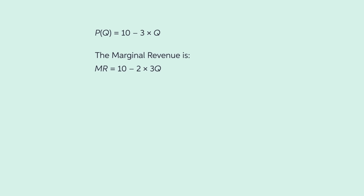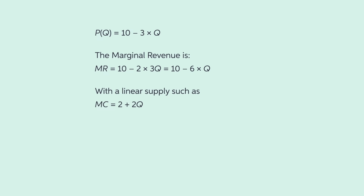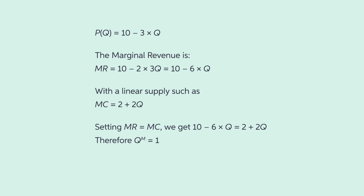For instance, if the demand is P equals 10 minus 3 times Q, then the marginal revenue is the first derivative of this function with respect to Q. Since the demand is linear in Q, the first derivative is a function twice as steep as demand: marginal revenue equals 10 minus 2 times 3Q, which equals 10 minus 6Q. If we assume that the marginal cost of production is 2 plus 2Q, then we can find Qm by setting marginal cost equal to marginal revenue and solving for Q. We get that Qm is equal to 1. Substituting Qm in the demand function, we get an optimal price PM equal to 7.